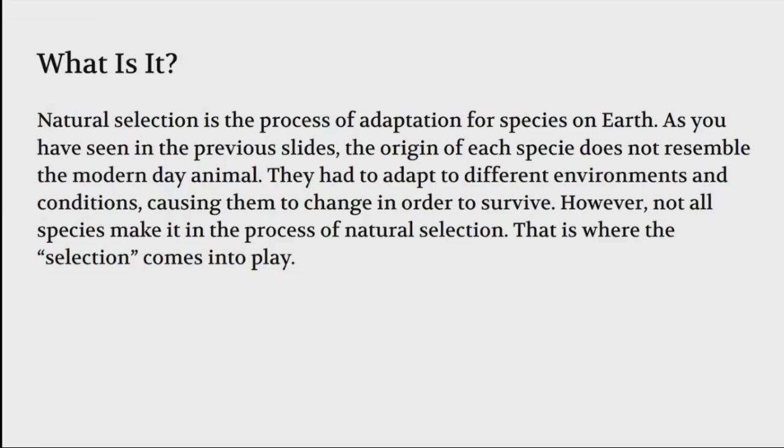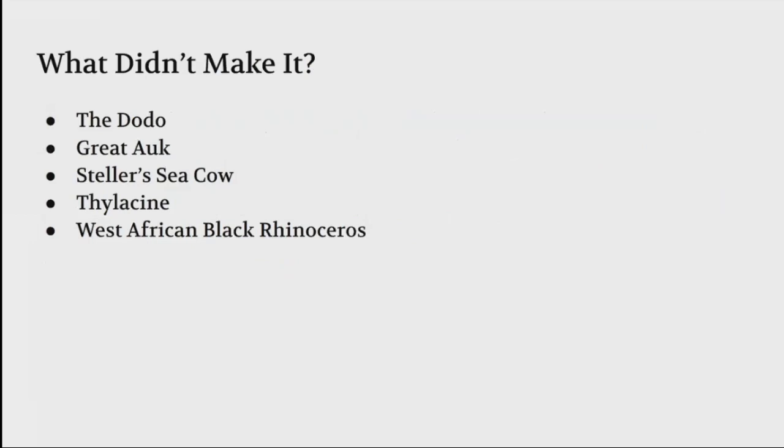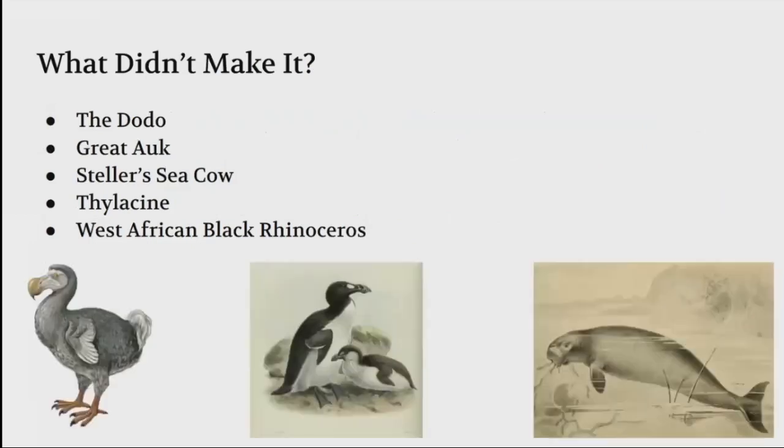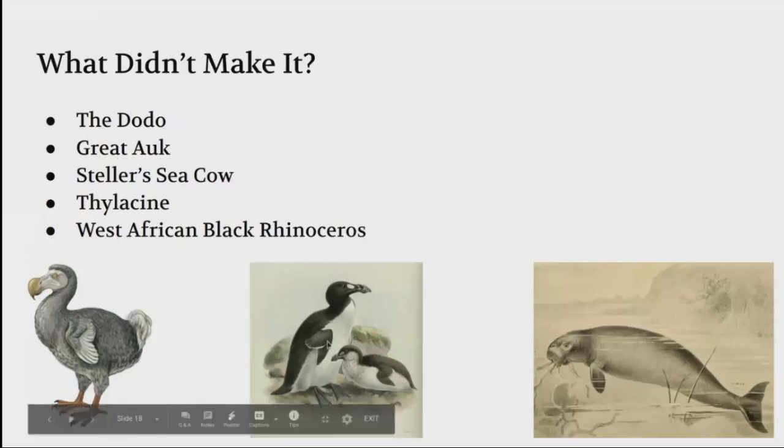These are just a few examples of species that did not make it or went extinct: the dodo, the great auk, the Steller sea cow, the thylacine, and the West African black rhinoceros. Right here on the left on the bottom left is the dodo, the great auk is the penguin-looking thing, and the Steller sea cow is the seal walrus seal-looking thing.